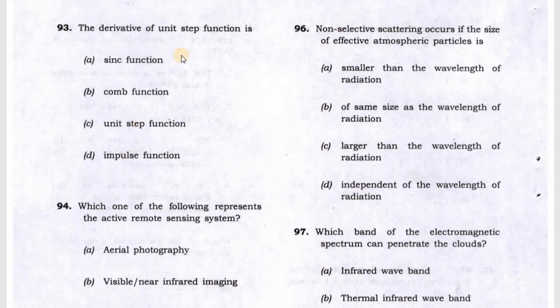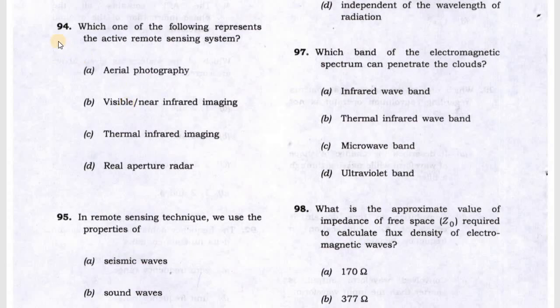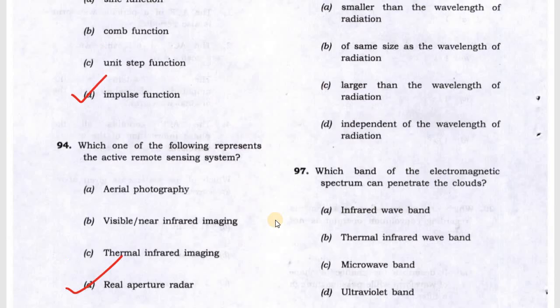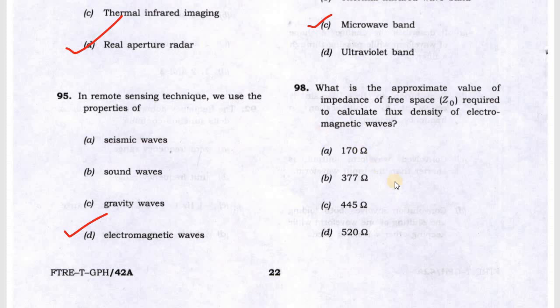Next is question 93. It is the unit step function, which gives the impulse function. Question 94 asks about active remote sensing, it is real aperture radar. Question 95 uses electromagnetic waves. Question 97 is microwave band. Question 98 will be B.